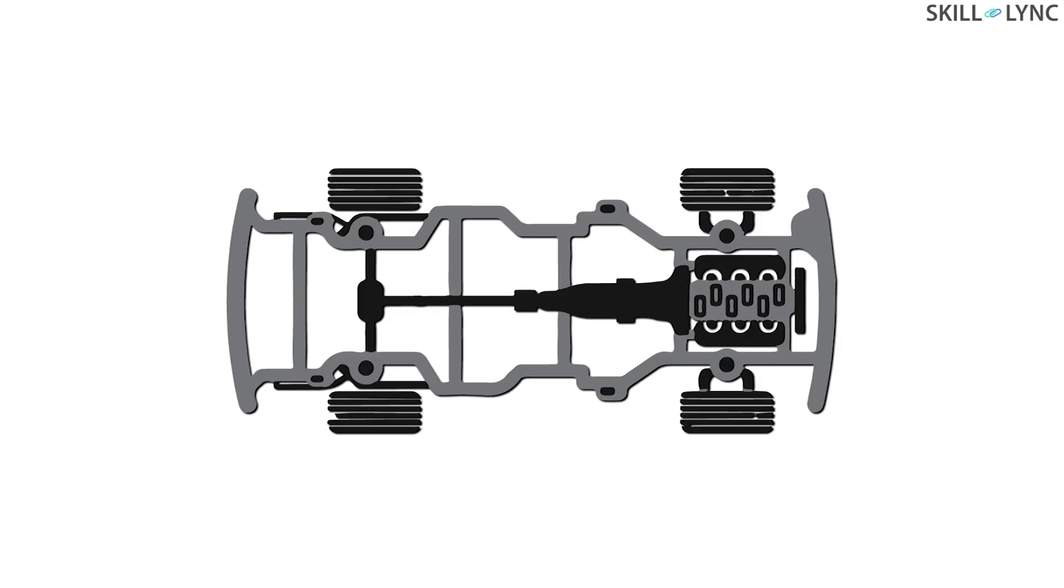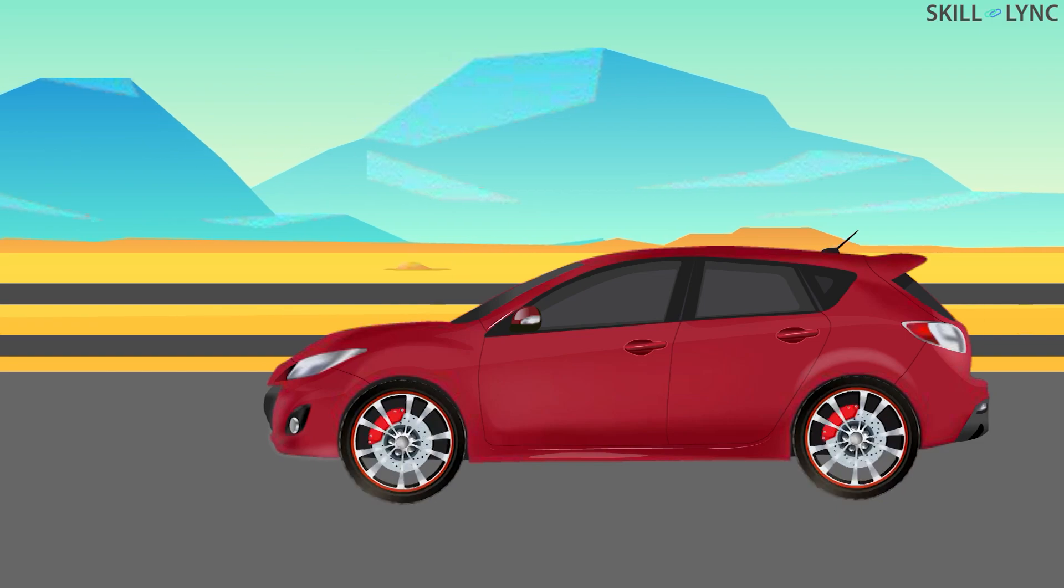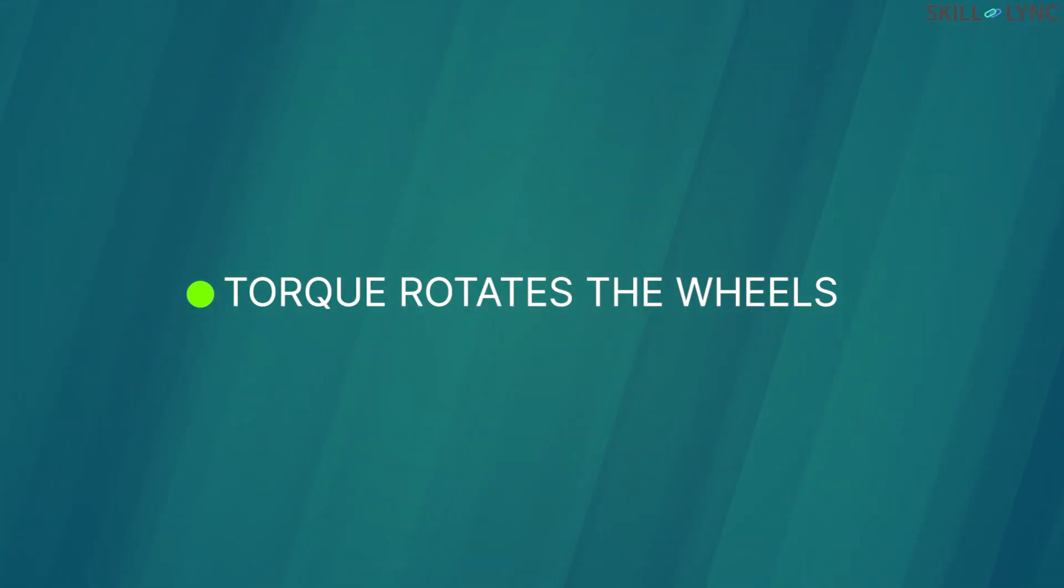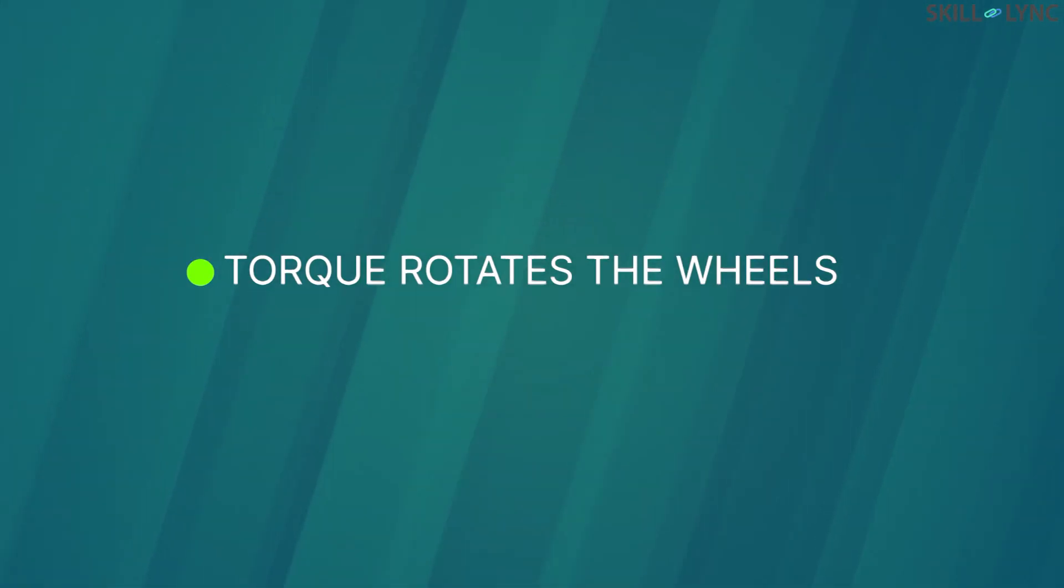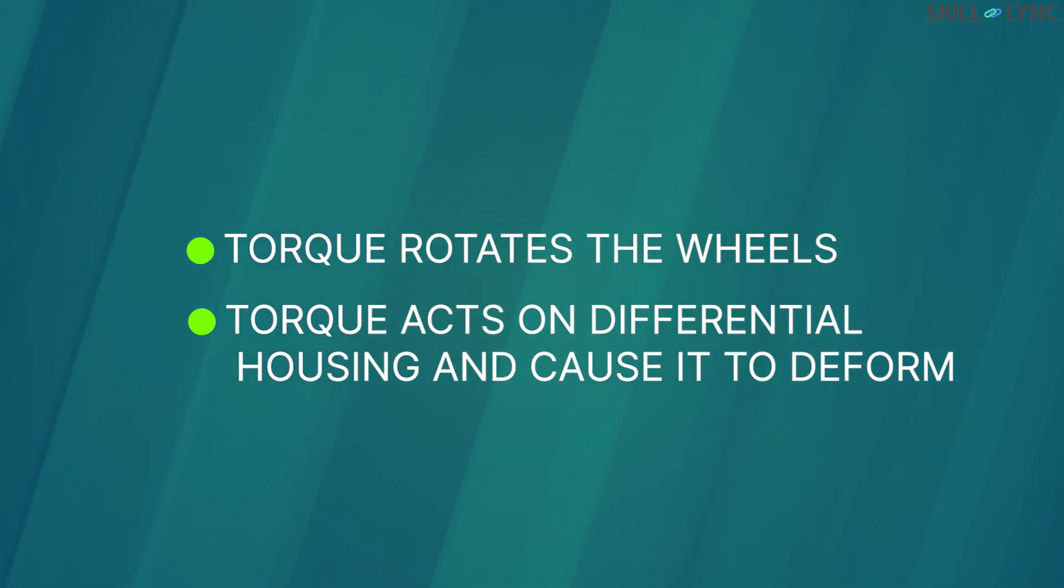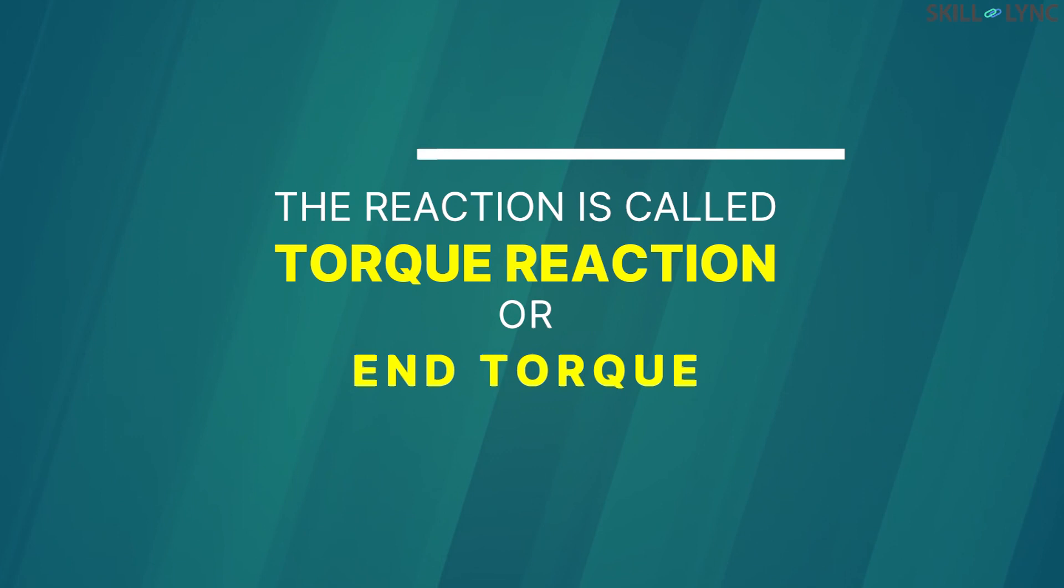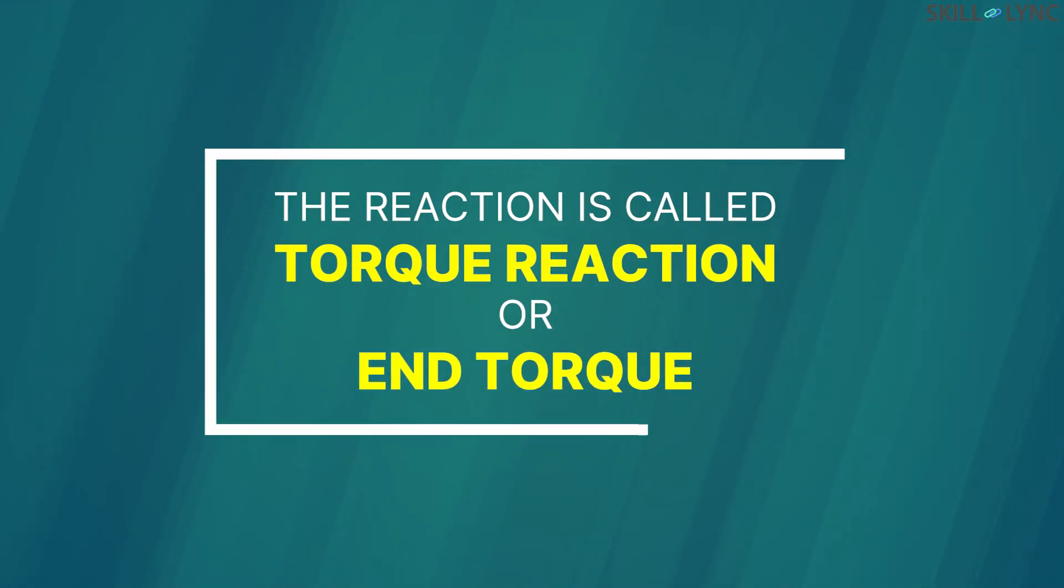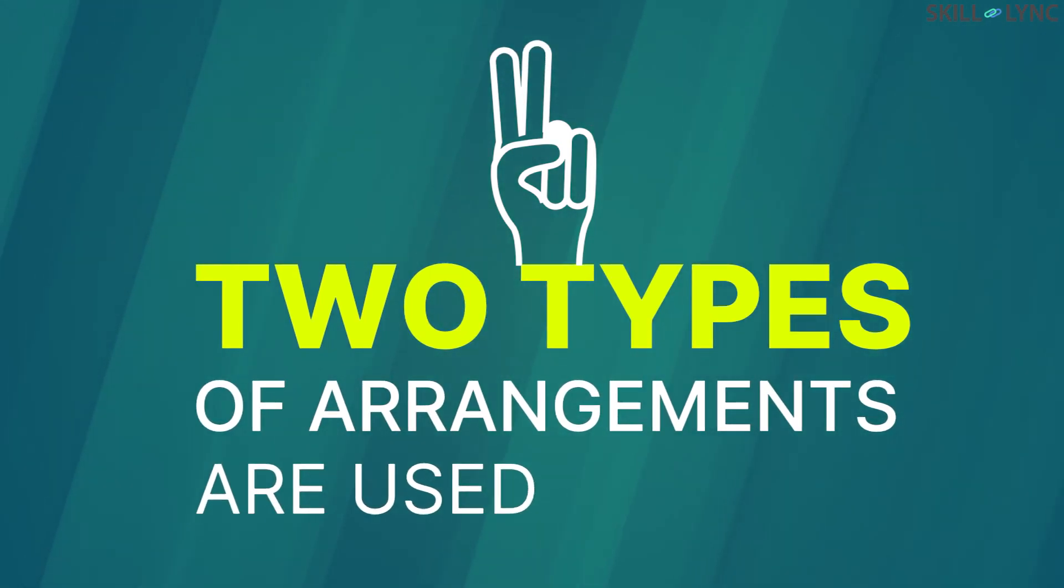Welcome back to the channel. We know that the power and torque produced by the engine is transmitted to the wheels and this is what makes the vehicle move. The torque produced not only rotates the wheels but can also act on the differential housing and may cause it to deform. This reaction on the differential housing is known as torque reaction or end torque. Two types of arrangements are introduced to withstand both the thrust and the torque reaction: Hotchkiss drive and torque tube drive.